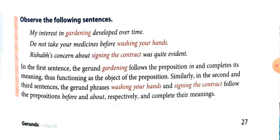Now students, some sentences are given here. Look at the sentences. First: 'My interest in gardening developed over time.' Second: 'Do not take your medicines before washing your hands.' Third: 'Research's concern about signing the contract was quite evident.' In the first sentence, the gerund 'gardening' follows the preposition 'in' and completes its meaning. Thus, it functions as the object of the preposition 'in'. Similarly, in the second and third sentences, the gerund phrases 'washing your hands' and 'signing the contract' follow the prepositions 'before' and 'about' respectively, and complete their meaning.